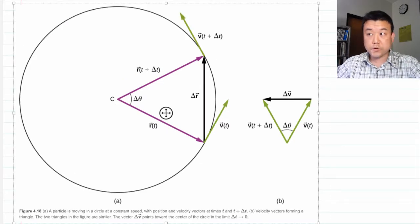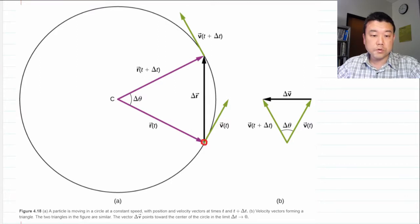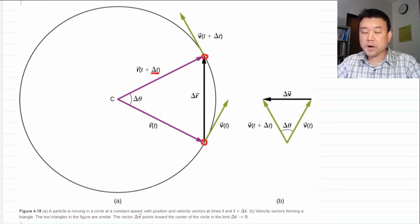This is Figure 4.18. It's showing movement of an object from one position to another position at a later time over a duration of time, as the particle follows a circular path.